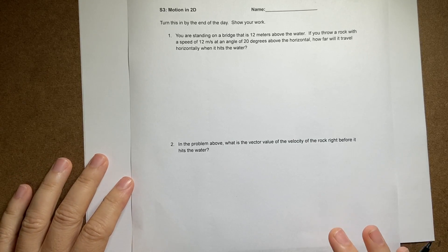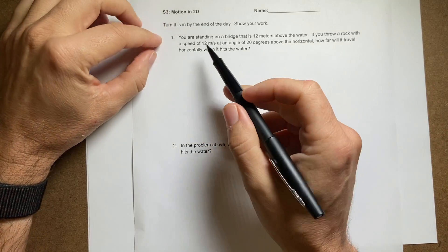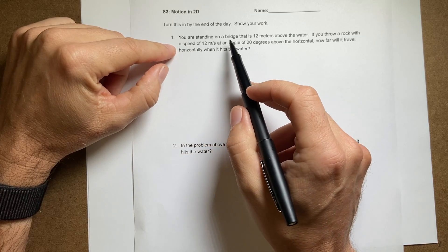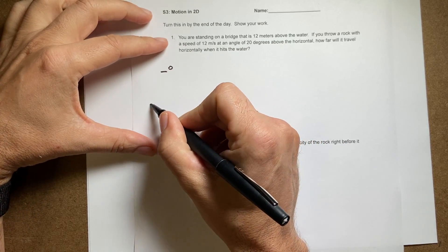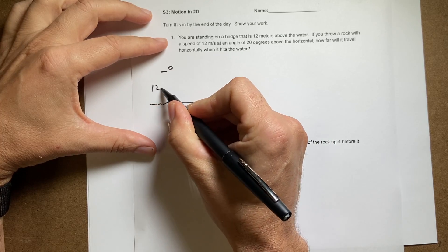Okay, here is a test on two-dimensional motion. So let's just start with standing on a bridge that's 12 meters above the water. I'm going to draw this. Here's my bridge. There's my ball. There's the water. 12 meters.